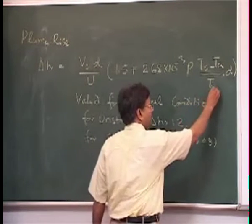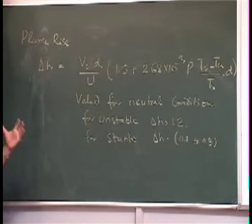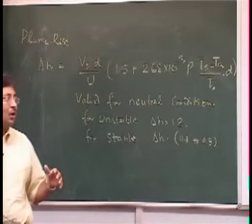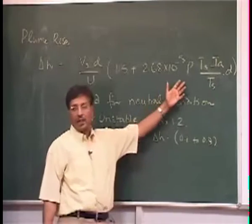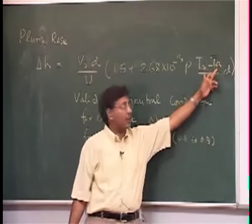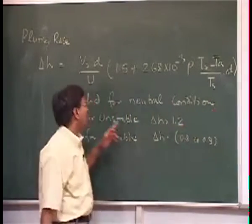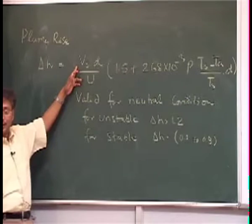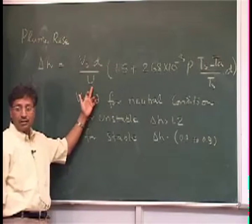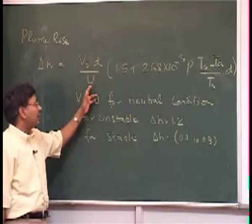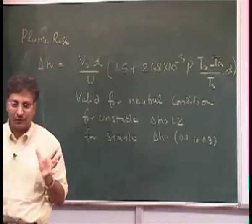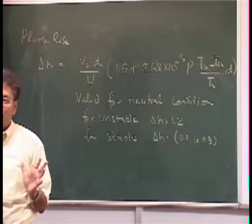If I want to increase delta H, because that is where I can minimize the impact, what are the things in my control? The ambient temperature I have no control over. I can increase the stack temperature perhaps. The diameter of the stack I can increase perhaps. The velocity of the exit gases I can manipulate — put a larger blower to blow things at a larger speed. I have no control on the horizontal wind. Sometimes wind speed can be very large, sometimes it can be low.